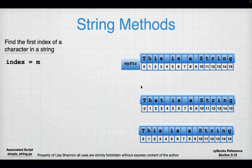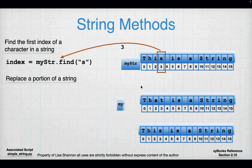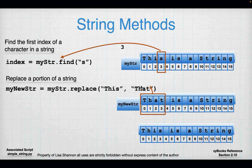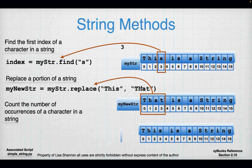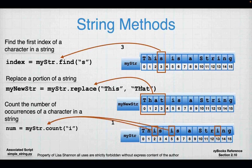There are also string methods. Find — the first index of a character in a string — is the find function; you might need that in a lab. Replace a portion of a string using the replace function, replacing the target characters with the replacement characters. Count the number of occurrences of a character using the count function. All of these work on value, not on index, all use dot notation, and all return a new string — so they must be on the right-hand side of a single equal sign with a variable on the left-hand side.